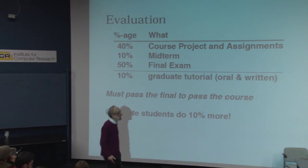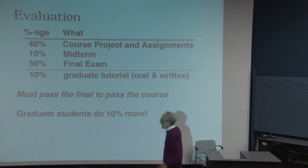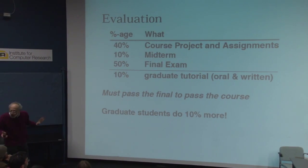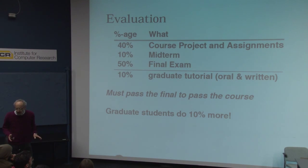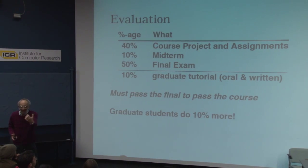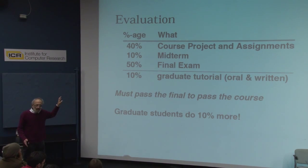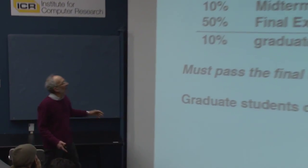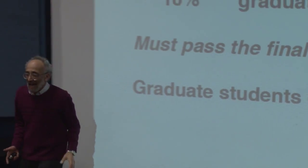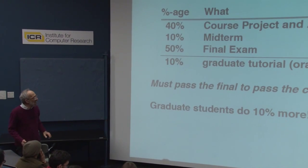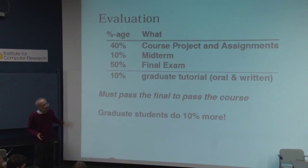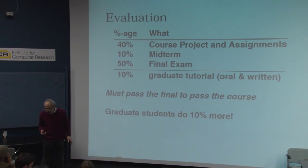What you really want to know is how you get evaluated for the course. Some instructors differ, but usually 40% of the grade will be about a course project and the assignments related to it. There will be a midterm that counts 10%, and the final exam counts 50%. If you happen to be a graduate student, you will have to do 10% more, and the rest is scaled to 90%. You must pass the final in order to pass the course. Some instructors don't bother with the midterm, in which case the project will be 50%.